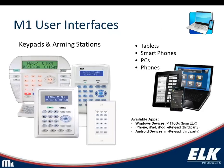ELK also offers traditional hardwired keypads, including the original keypad and a smaller arming station that fits in a single-gang box — great for a side door where you just need basic system status. To the right is what most users will use to interact with their system: smartphones, tablets, and PCs. You can arm, disarm, or check the status remotely — maybe you can't remember if you armed the system before leaving for work.